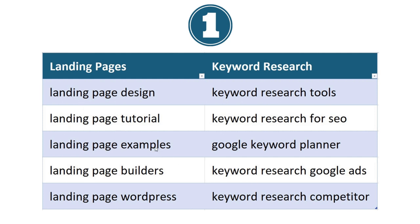Something like 'landing page examples' could become '10 awesome landing page examples you can learn from.' You could do landing page WordPress plugins, or 'five easy ways to create landing pages with WordPress.' For keyword research tools, you might do '10 keyword research tools.' Essentially, take a keyword and create content that satisfies the user intent. When someone searches for keyword research tools, they want a long list with the pros, cons, free options, and premium options. Take all that into account as you're creating your content.